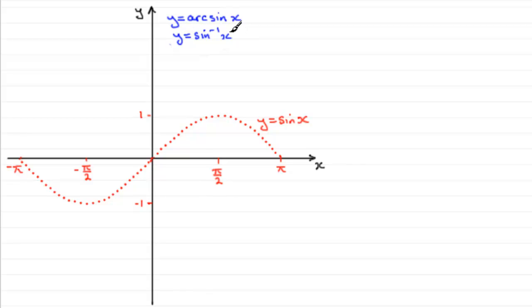So what does this graph look like? Well, we should be familiar with the fact that if you've got some relationship y equals f of x, to get the inverse of this relationship, all you need to do is reflect the graph of y equals f of x in the line y equals x.